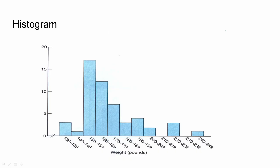Hi friends, so in this video we will see the graph histogram, frequency polygon, and stem and leaf display. So we will see the histogram. If we use this histogram, we will use grouped data. Grouped data, frequency and frequency, so we will use this histogram.